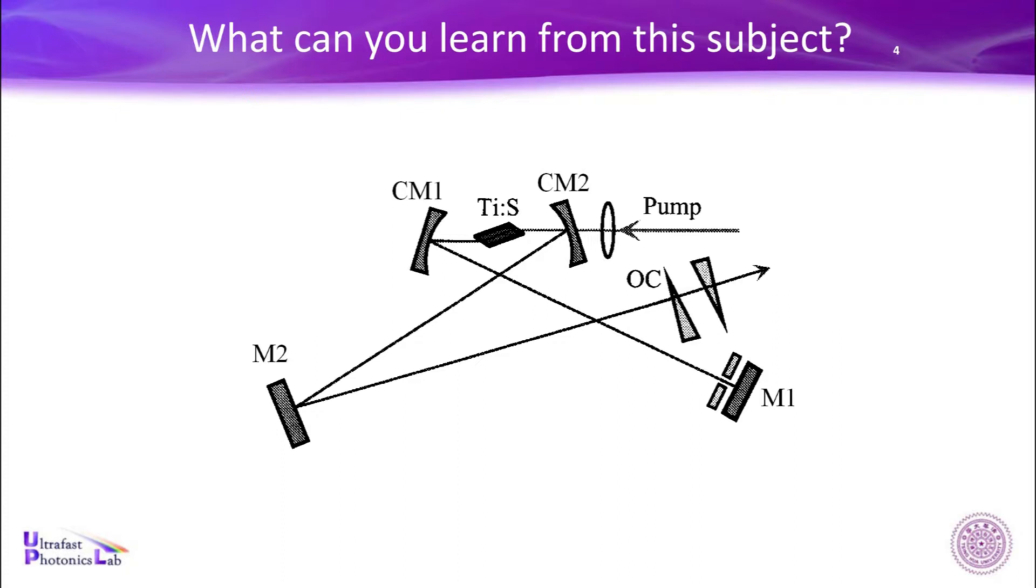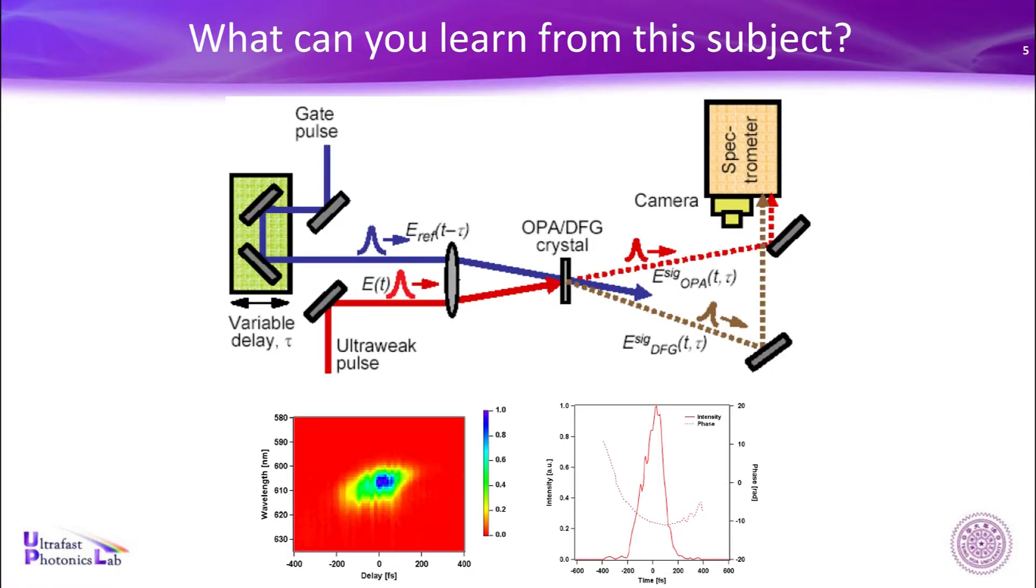Do you know how expensive this laser is if you try to buy one? Anyone knows? One million. Yeah, you are right, it's in that order, but usually it's more expensive than one million, maybe three million NT dollars. Just several mirrors, just one crystal. But why they can sell this laser at such a high price? Because there are many know-hows, many knowledge. It's not about the cost of the materials, it's about the cost of the knowledge. So knowledge is not just only power, but also money.